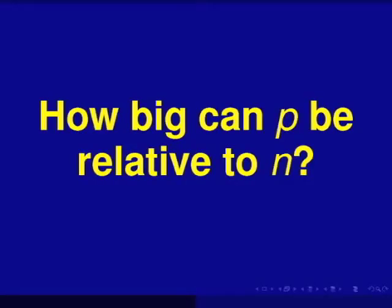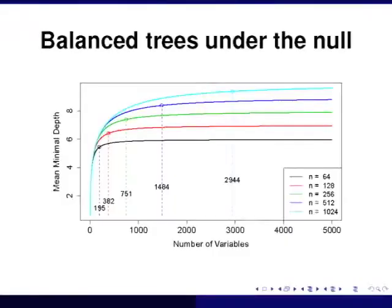To get into this, the first thing I want to look at is the question of how big p can be relative to n. We're starting to see massive data sets where the sample size is much, much smaller than p. What we found in our JASA paper was, not surprisingly, that trees are certainly not immune to overfitting. If you overwhelm a tree with variables, minimal depth thresholding basically saturates and it becomes literally impossible to do accurate variable selection.